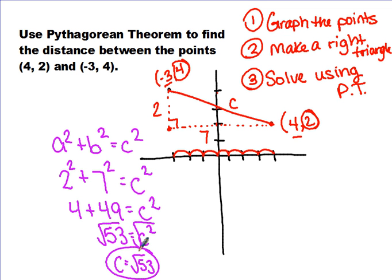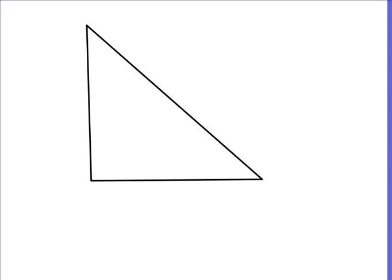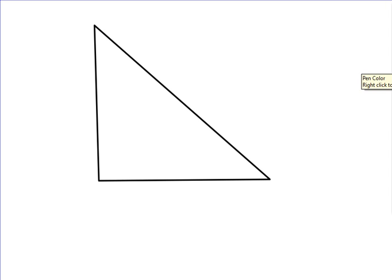I'm going to put one more example of a triangle on the board for you. I want you to go ahead and use the Pythagorean theorem to solve for the missing sides of this right triangle. And we'll come back and check it in class.